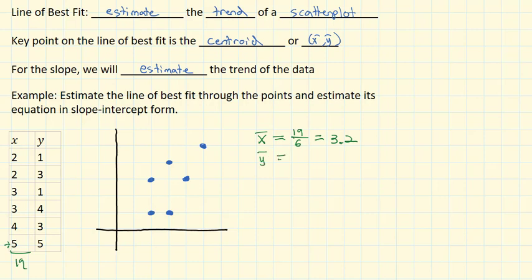And for y bar, our average y point, we'll add up the y's: 1 plus 3 plus 1 plus 4 plus 3 plus 5. That's going to be 17. And when we divide by the 6 points, we'll get 2.8.